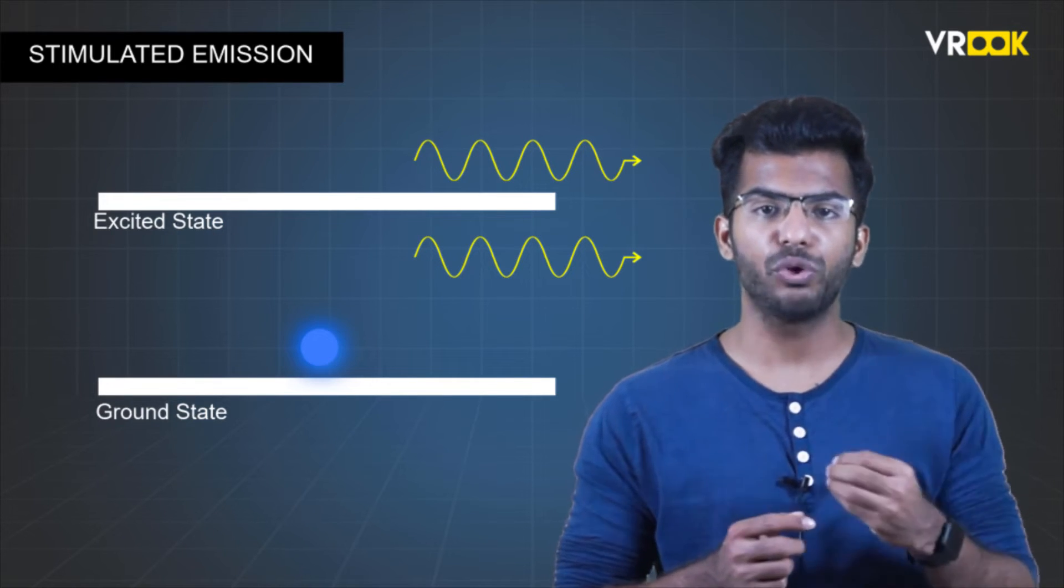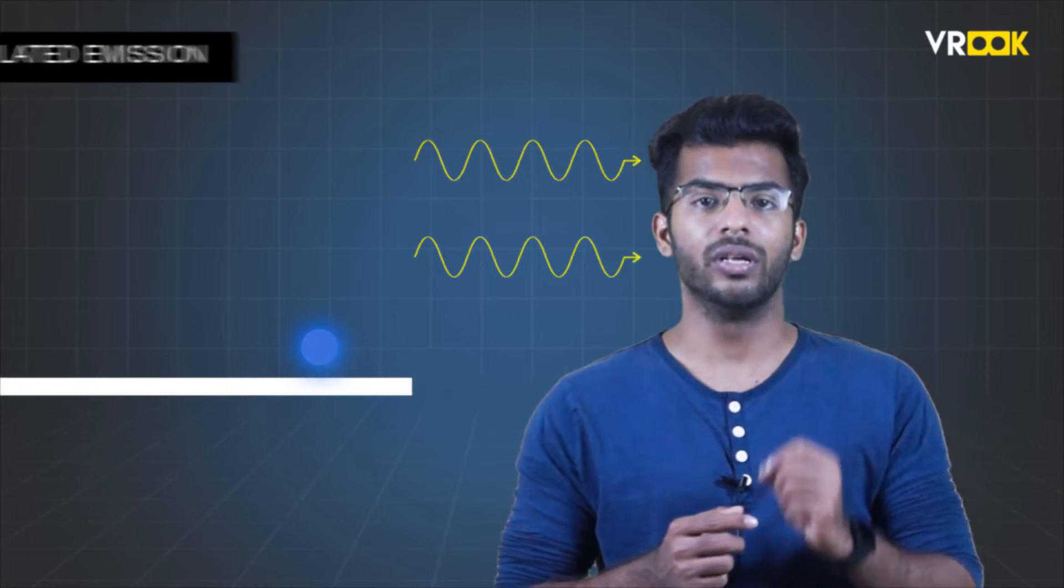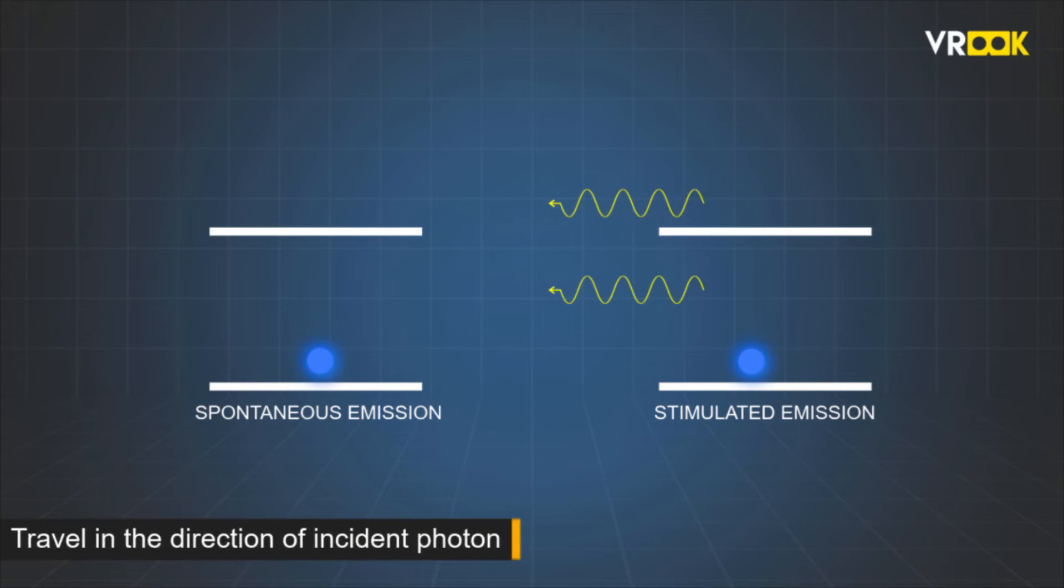The unique property of this photon is that it will be in the direction of the incident photon. This will act like photon twins. This is the major difference between spontaneous emission and stimulated emission. The photon released in spontaneous emission can go in any random direction, whereas the photons released in stimulated emission will travel in the direction of the incident photon. This is the key feature of laser.